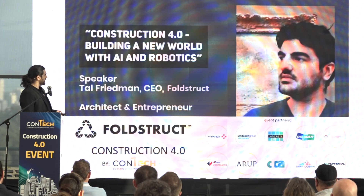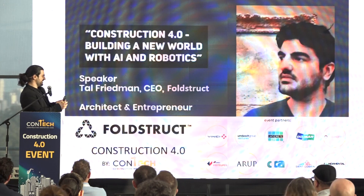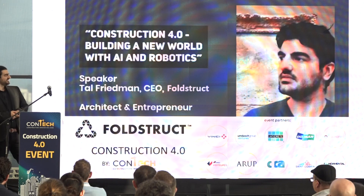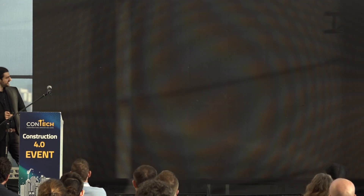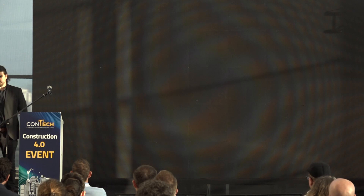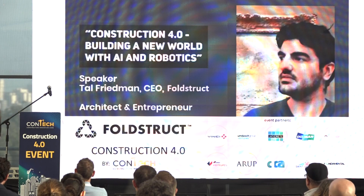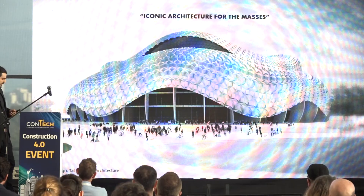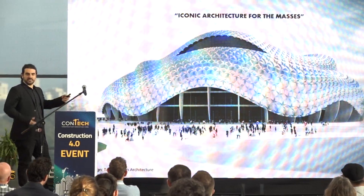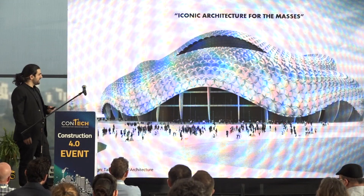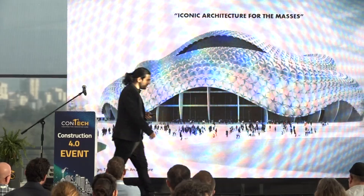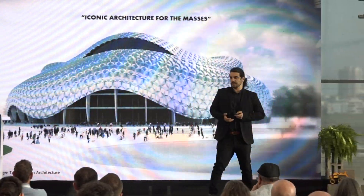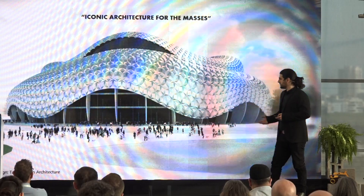I'm going to start my talk with what is kind of a paradox: iconic architecture for the masses. We're all talking about how to build quicker and more efficiently, but the question is, what are we really building? This is a design I've made which talks about freeform architecture, which is a movement that's quickly transforming the built environment.